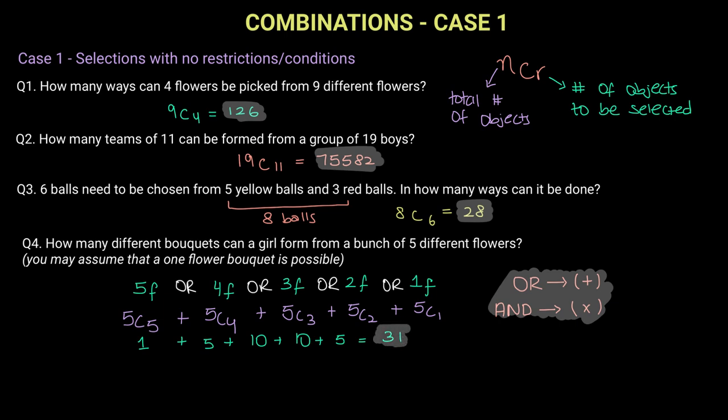So to conclude, case one is when there are no restrictions and conditions. We simply need to choose a certain number of objects from the total number of objects. We do not need to arrange, we simply just need to select and form different combinations. Like in question number four, if they have not specified how many different objects are to be selected, we need to make different cases and then add all the cases. So thank you.